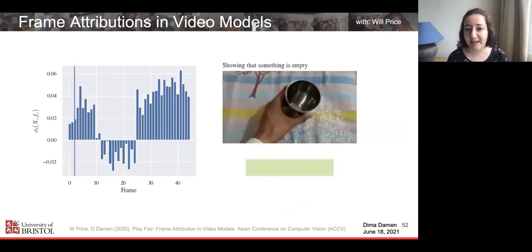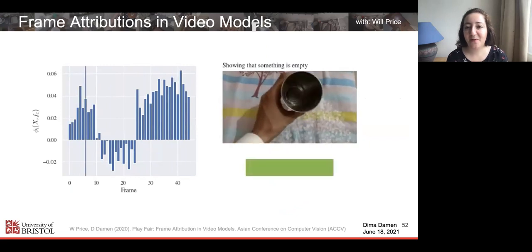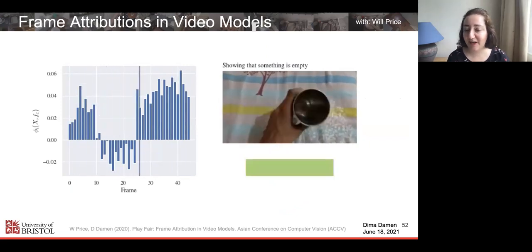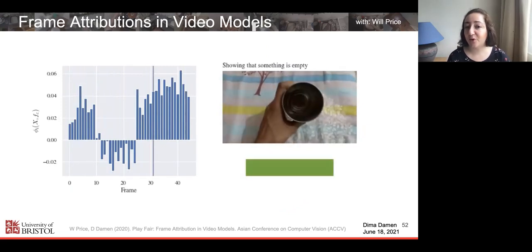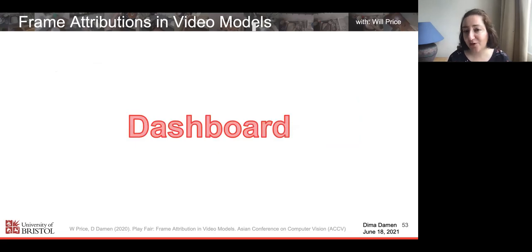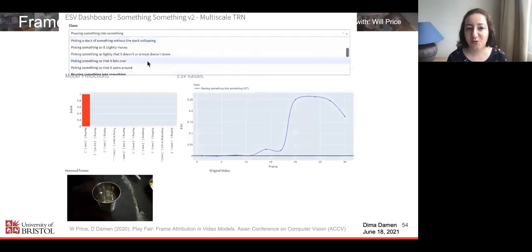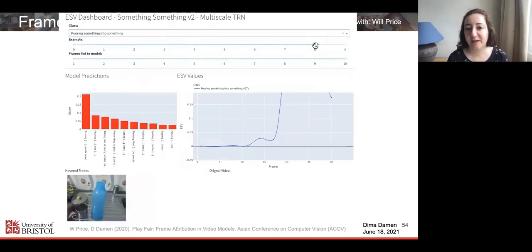This is from the Something-Something dataset. What you can see is that the action is showing that something is empty. When the person actually flips, they are not really contributing to that class. That is giving you negative contributions of these particular frames. We have a published public dashboard that allows you to play with this task. You can choose a class and then look at the attribution of a model that we provide and then see the attribution of that particular model and which exact frames correspond to this class, which is pouring something out of something.